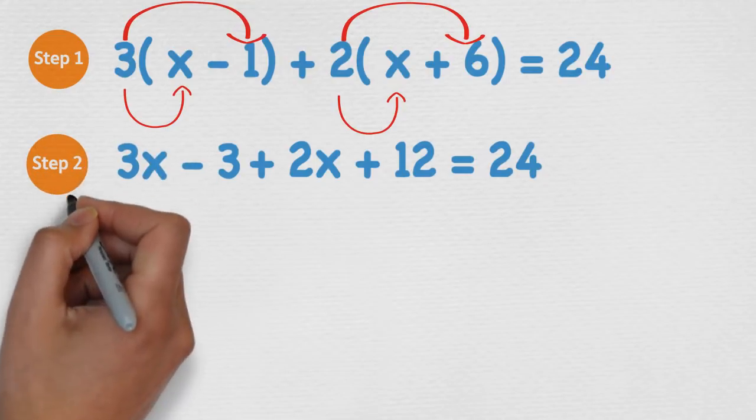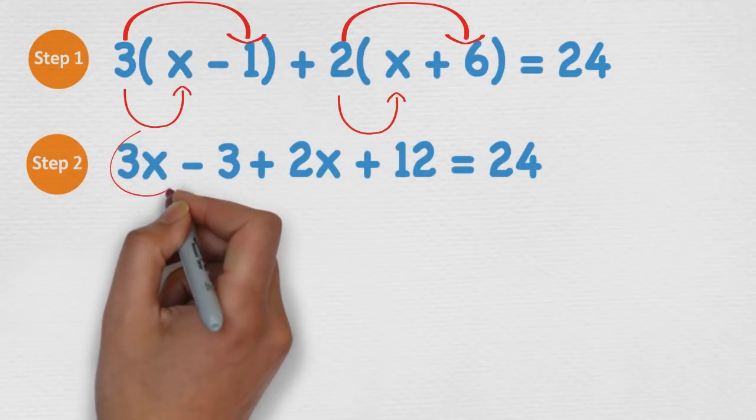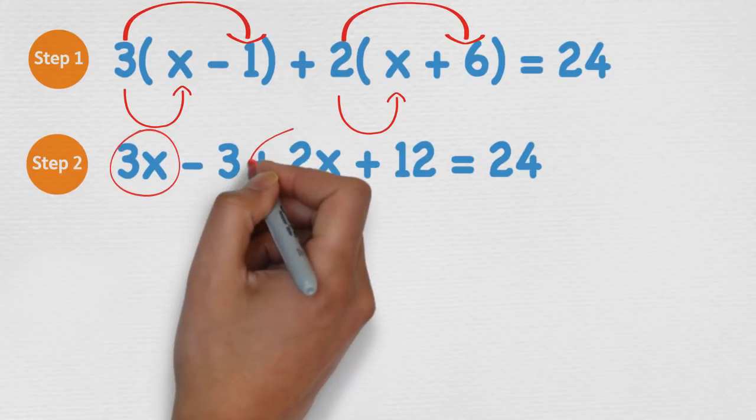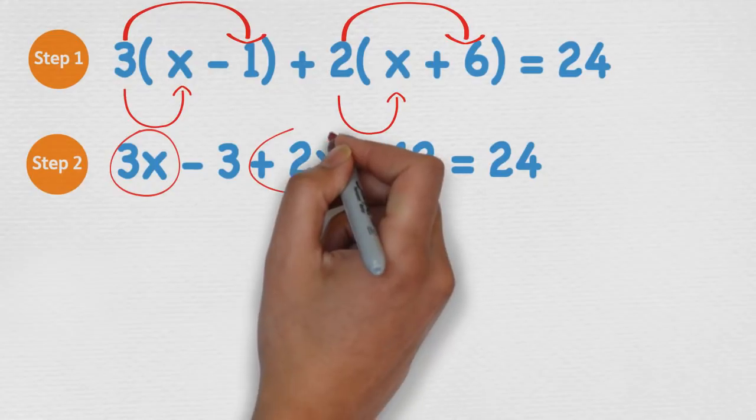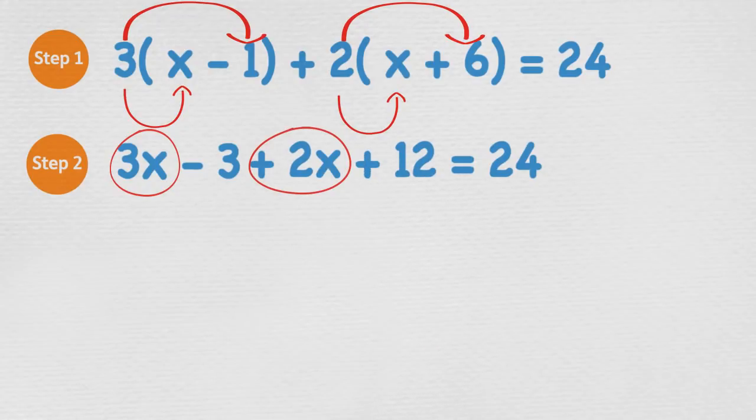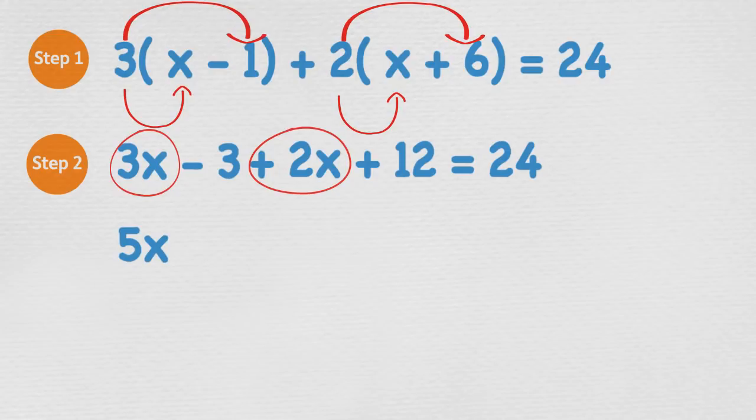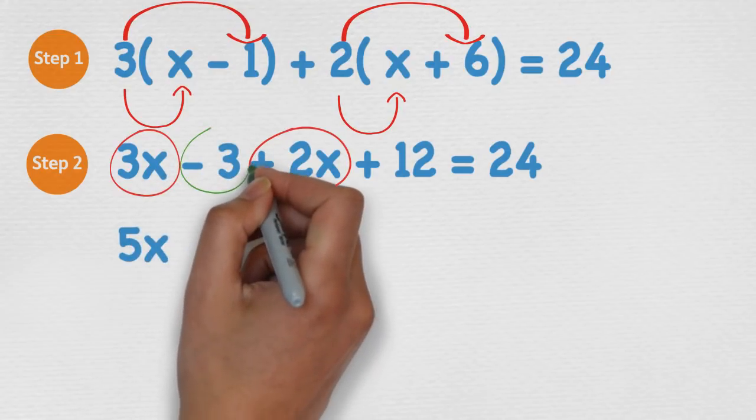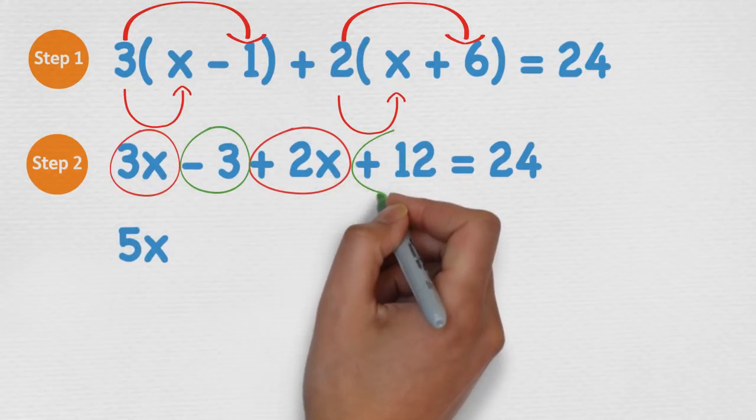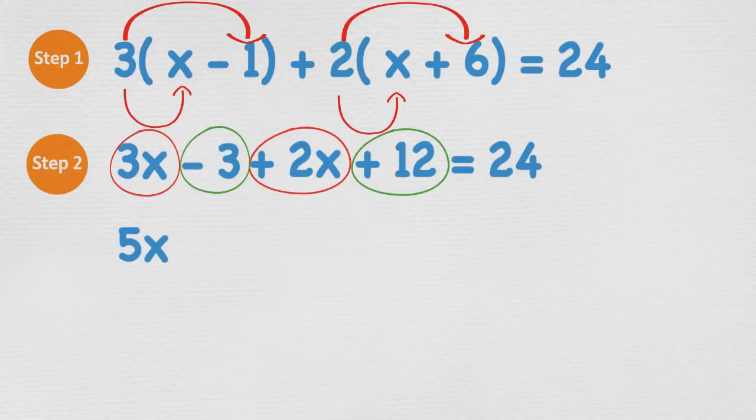Now we've expanded the brackets, we can move on to collecting like terms. 3x and 2x are both positive values and are like terms. So we can add these two together, which equals 5x. Now minus 3 or negative 3 and positive 12 are like terms, so we can add them two together. So negative 3 plus 12 equals 9. So we are now left with 5x + 9 = 24.